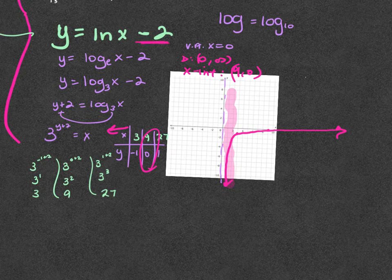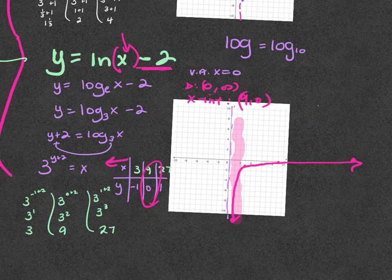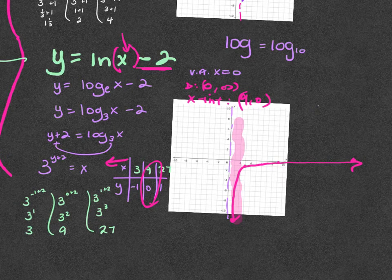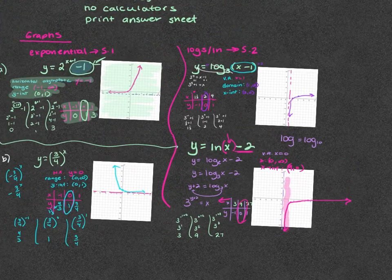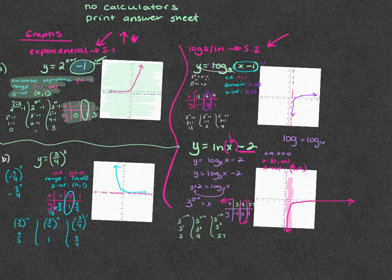This is a vertical shift now and not a horizontal shift. If it's inside the parentheses with the log, that causes the shift which changes the vertical asymptote. With exponentials the shift happens up and down — outside the exponent. With logs, the shift happens left or right — inside the parentheses.